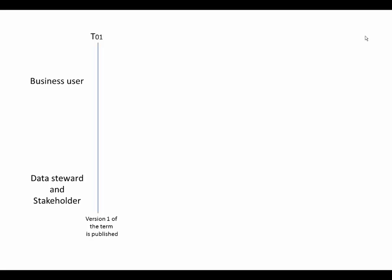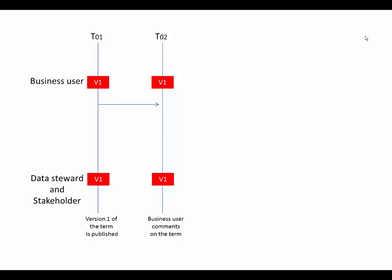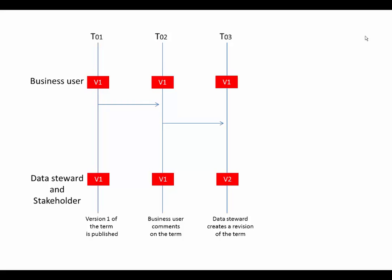This animation describes the timeline of events after a business term is published. Business users, data stewards, and stakeholders see the published version of the term. The business user adds a comment to the current version of the term. To update the properties based on the comment, the data steward creates a revision. The data steward and stakeholders see the new version of the term, while the business user continues to see the current published version. The data steward updates the term properties, and the revision enters Draft phase.